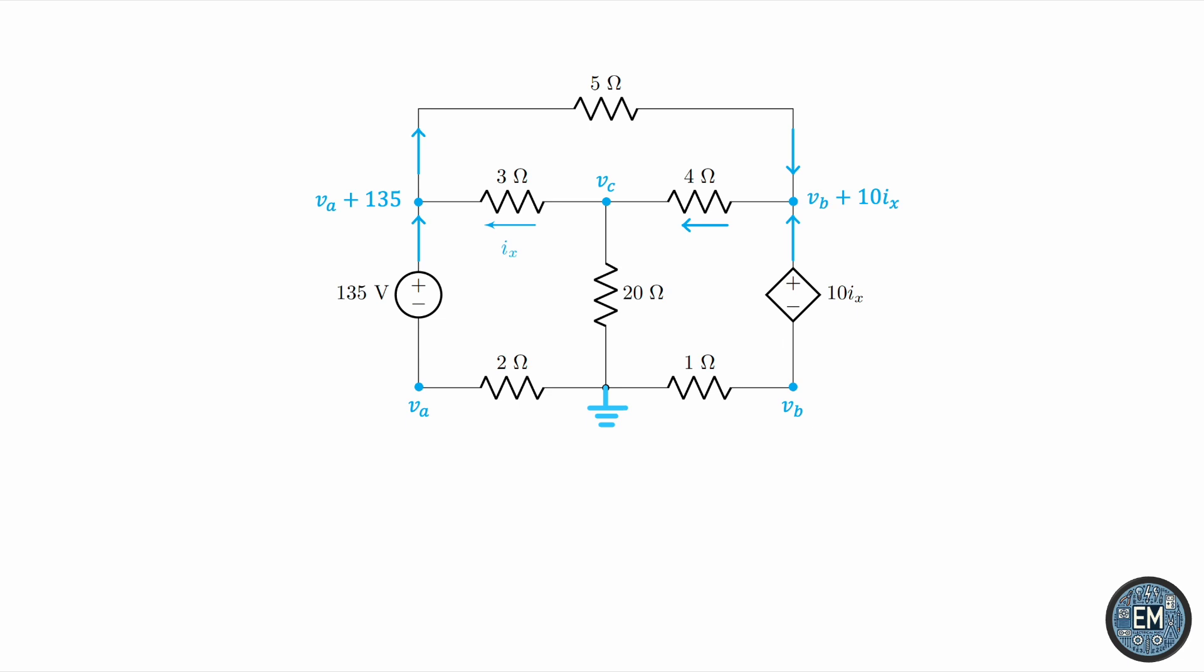And then at VC, IX comes out, flows to the left, and let's say we have this current flowing down. At ground, it splits. Part of it goes to the 2-ohm resistor, reaching the source. And the other part goes through the 1-ohm resistor, reaching the dependent source. This is a reasonable assignment of current directions throughout the circuit.